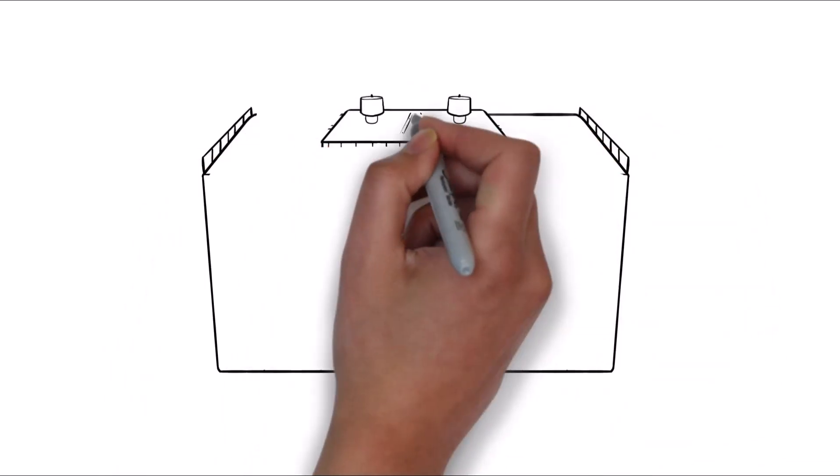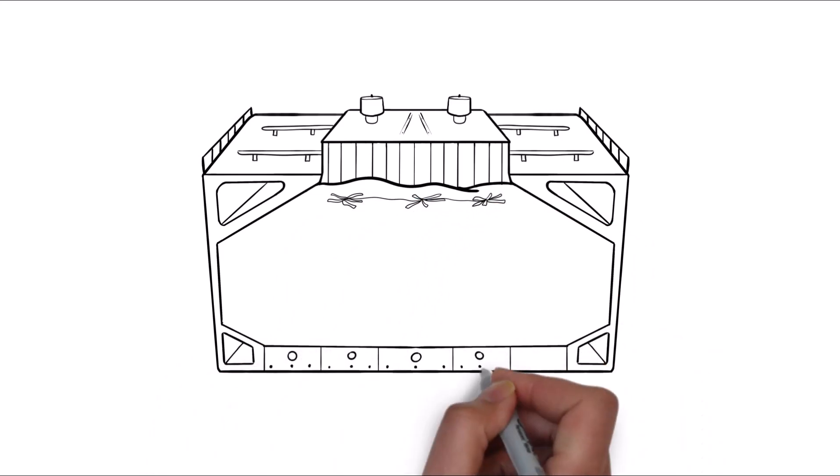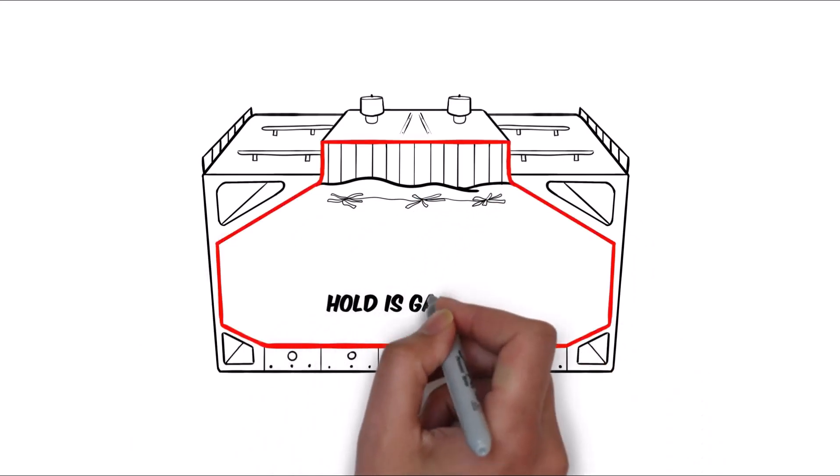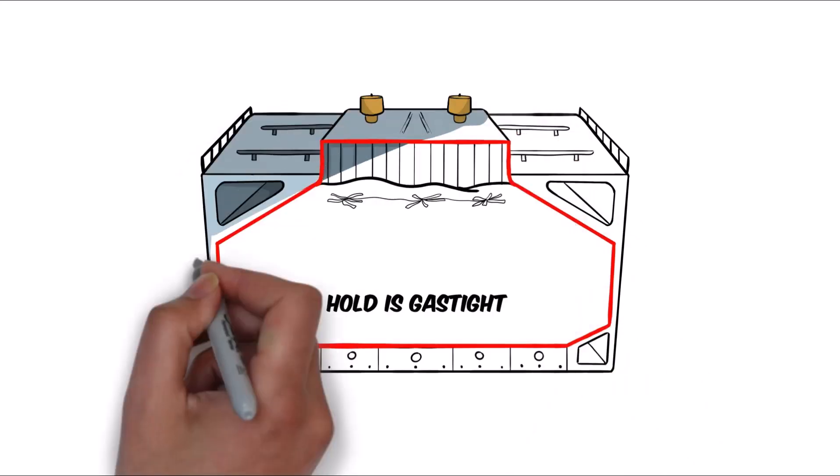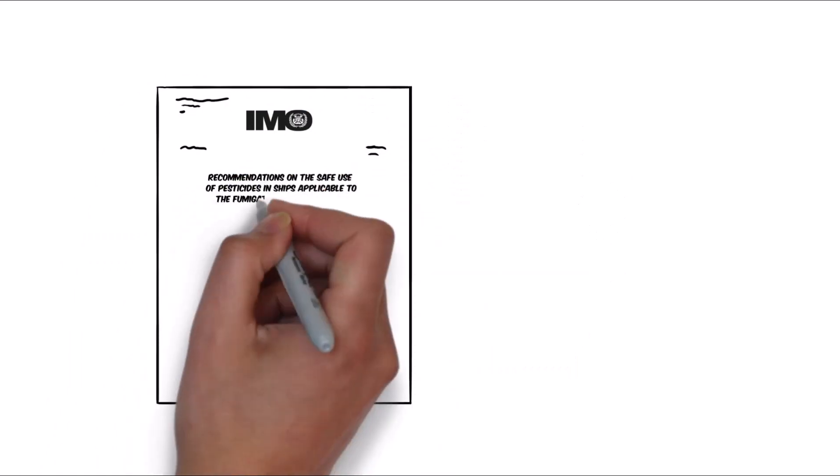Many agricultural products need fumigation before and during a voyage. The applied fumigant can be in solid or liquid state and forms a gas. For fumigation to be effective, cargo holds must be gas tight. The IMO gives guidance in MSC circular 1264 and 1358.